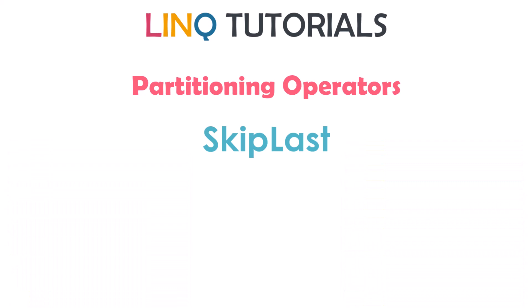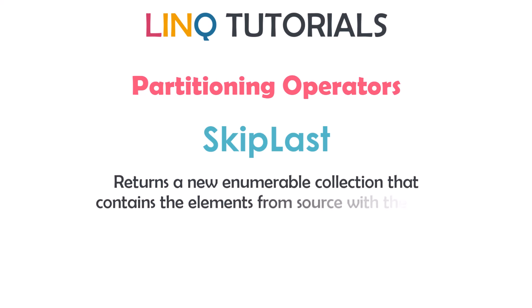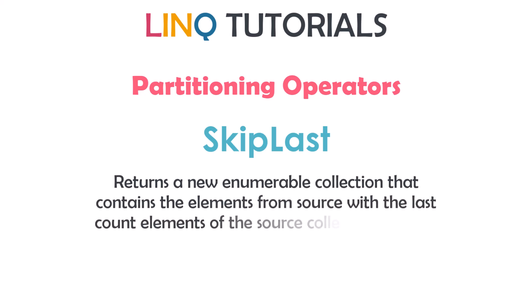As the name suggests, this operator is used to skip the last elements of a sequence. It returns a new enumerable collection that contains the elements from the source with the last count elements of the source collection omitted. It means I have a sequence of elements and I want to skip only the last specified elements from it. We have only one overload for this operator — we can use it with a number in brackets, so this operator means I want to skip the last three elements of a sequence.